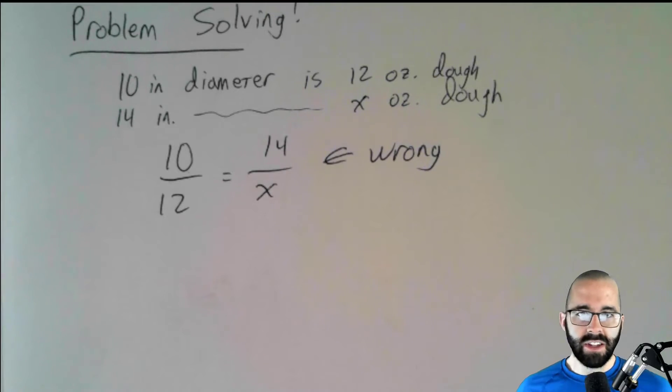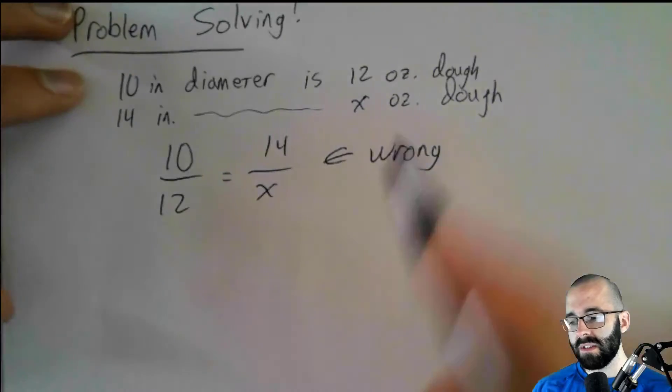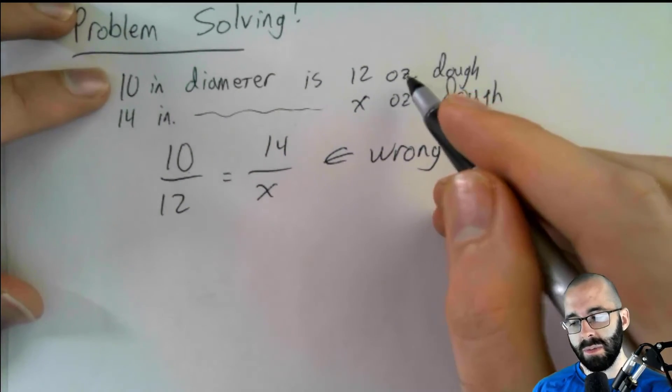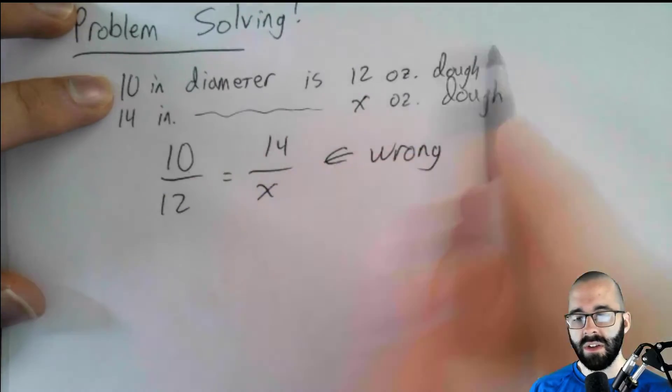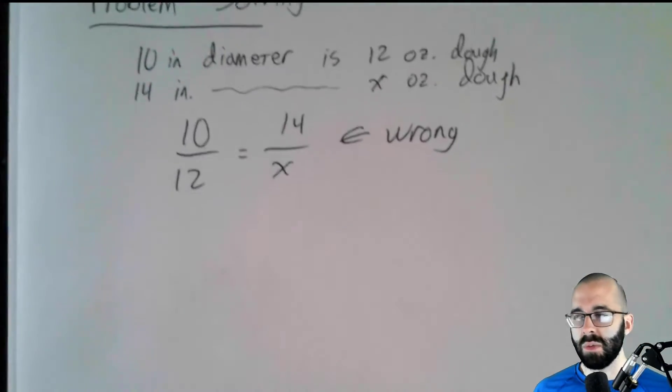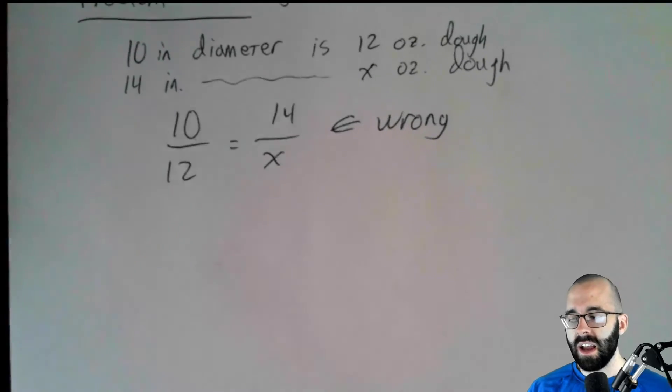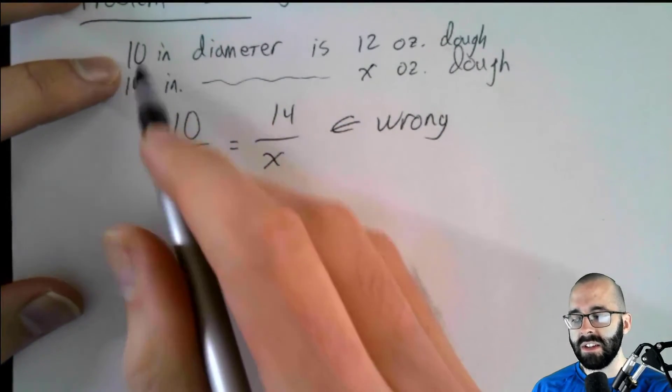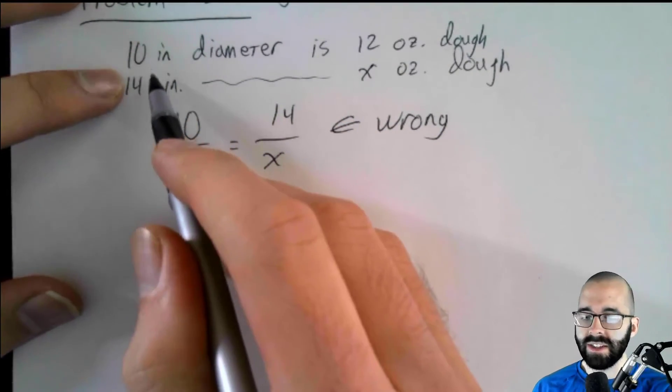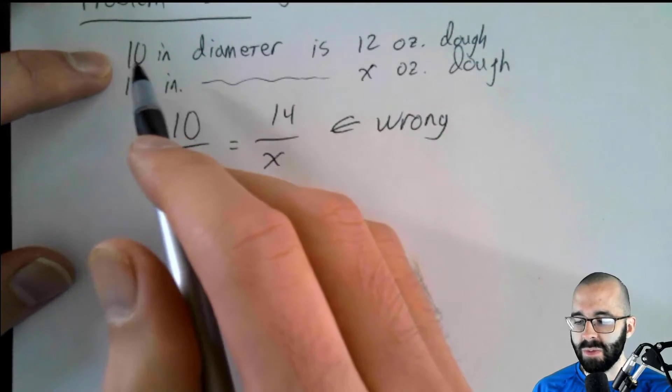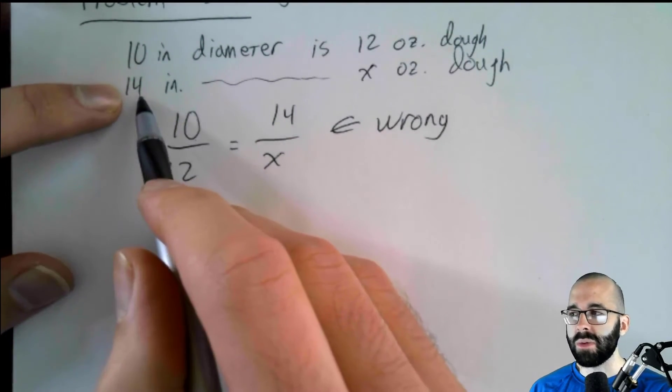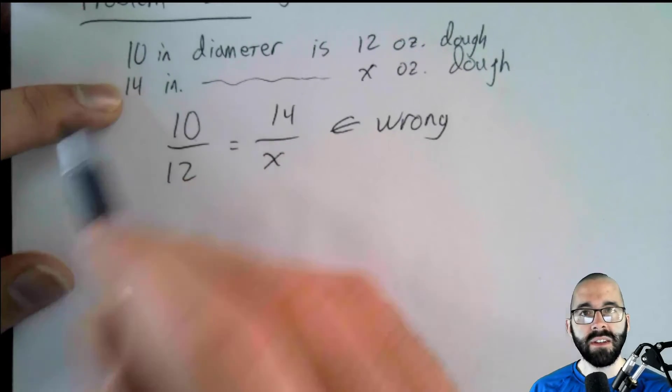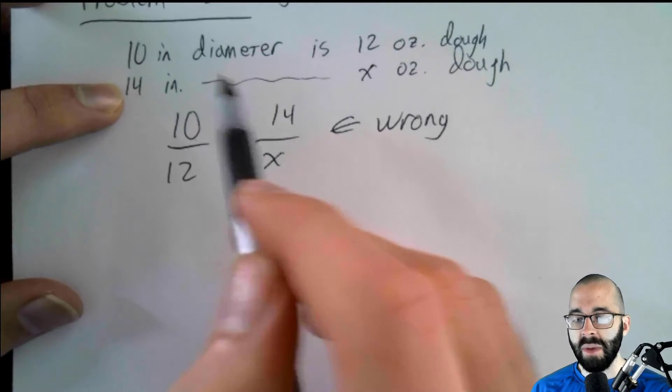So mathematically, it's using the proportions that we used before, which is fine. But the issue is that this is not a linear relationship, because the dough is not a length, right? The dough is a volume. The dough is a quantity. And by linearly scaling, we're not just increasing the dough by 40%. If we increase the diameter by 40%, the dough changes by a different amount.